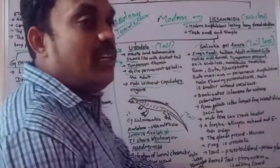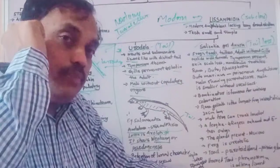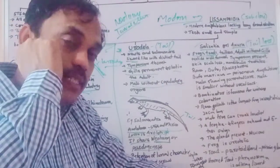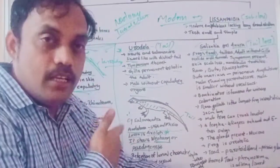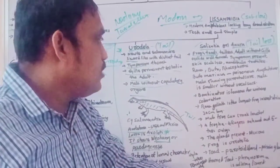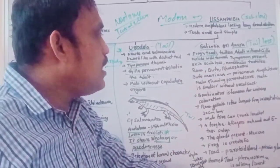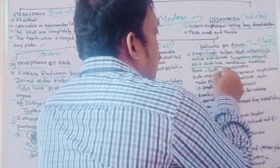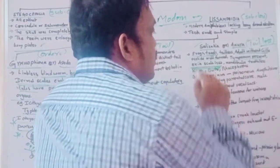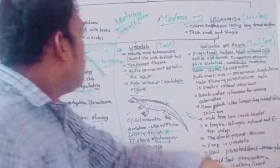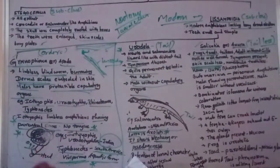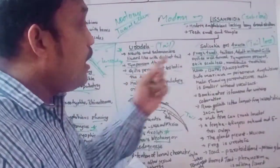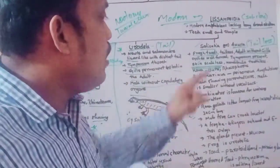Examples of Salentia: Rana tigrina, Bufo, and Rhacophorus. Rhacophorus is also called the flying frog — it jumps from one tree to another. Rana tigrina is the scientific name of the frog. Bufo marinus is the scientific name of toad, which is a poisonous amphibian — very important.